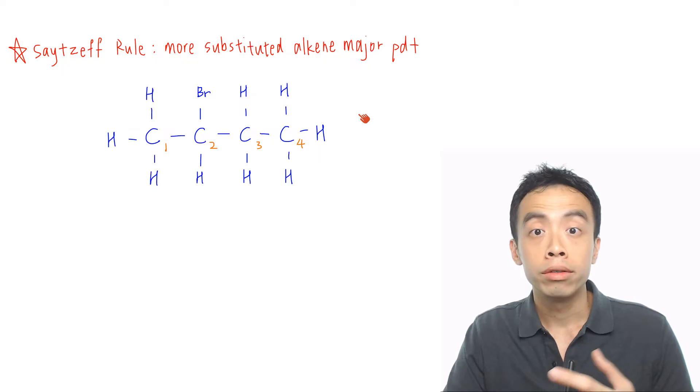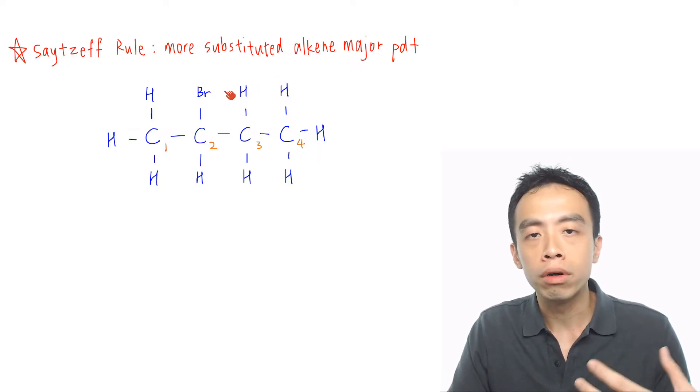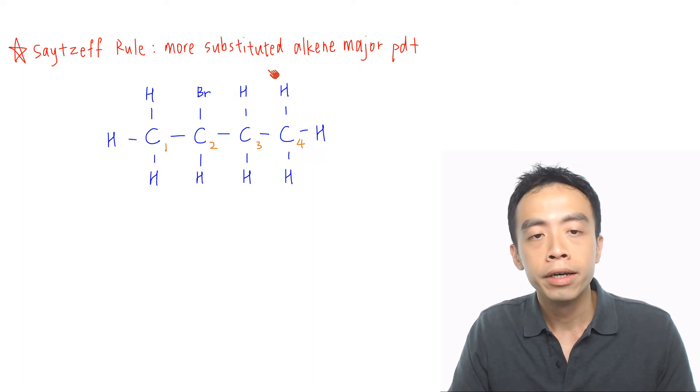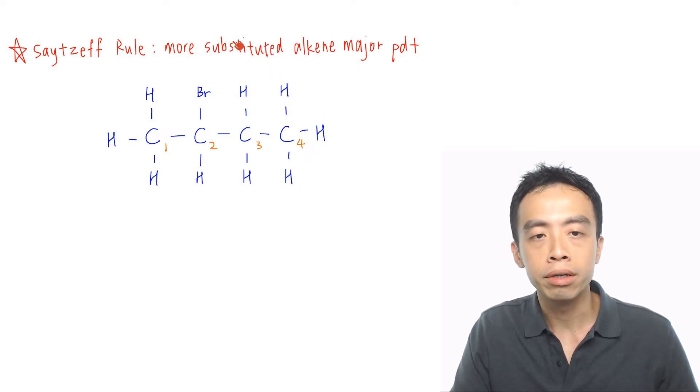So what we want to discuss today in this video is to make use of Saytzeff rule to predict the major product for elimination reactions of halogenoalkanes and alcohols. Now Saytzeff rule says that if you can form more than one possible alkene from an elimination reaction, then the more substituted alkene will be the major product.